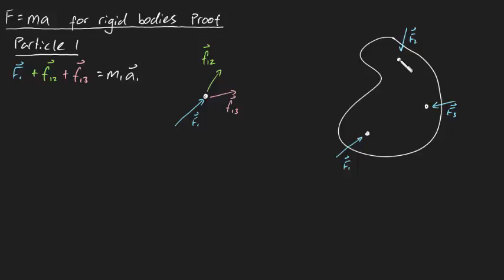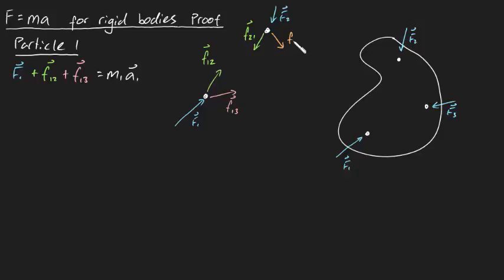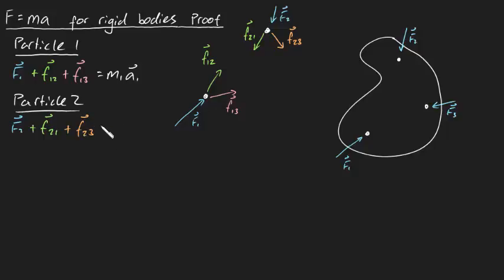So let's draw a free body diagram for particle two. Well, there's going to be one external force, F2. But from Newton's third law, there's going to be an equal and opposite force — so if particle two exerts a force on particle one, then particle one exerts an equal and opposite force on particle two. This is going to be F21. And maybe you've got a force from particle three on particle two, so this will be F23. Applying Newton's second law to particle two: F2 plus F21 plus F23 is going to be equal to M2 times A2.